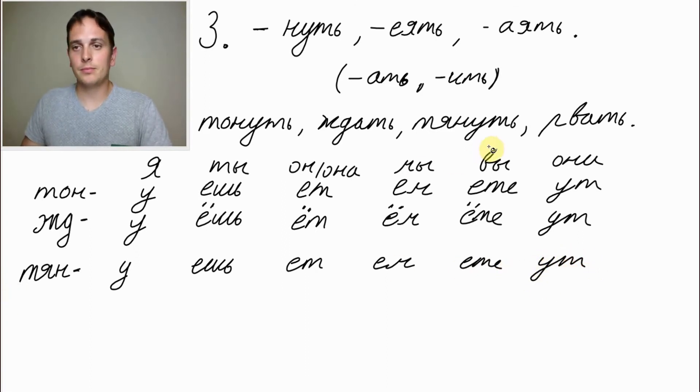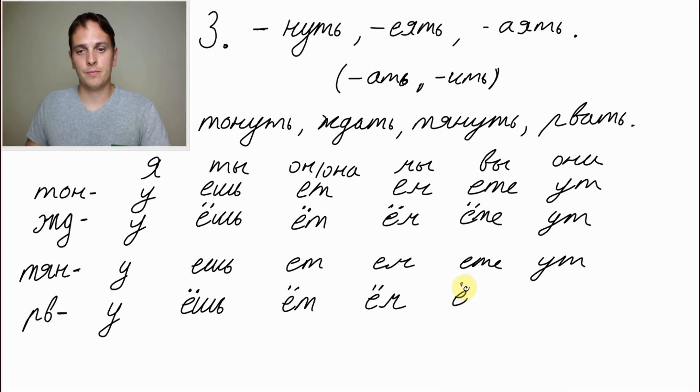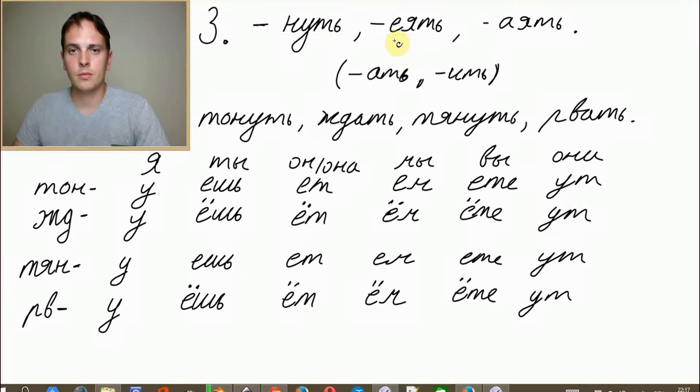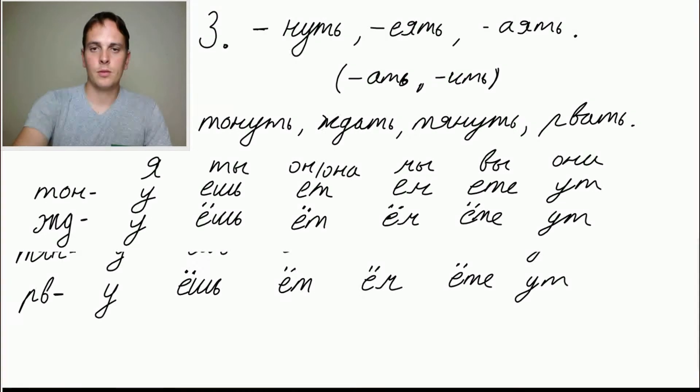Рвать. We are removing the last few letters and we got рв left. Я рву. Ты рвёшь. Ты рвёшь. Он, она рвёт. Мы рвём. Вы рвёте. And они рвут.